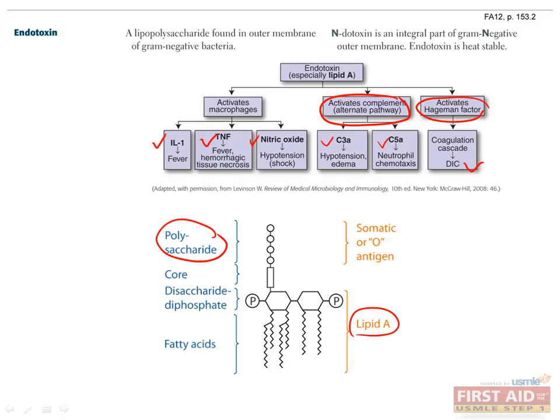Of note, Neisseria contains lipo-oligosaccharide, or LOS, a variant of gram-negative LPS endotoxin. It does not possess the O-polysaccharide moiety found in LPS, but still has cytotoxic capabilities like the LPS endotoxin.